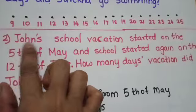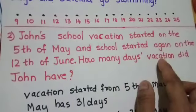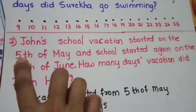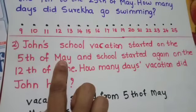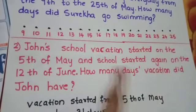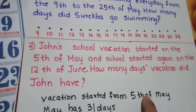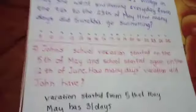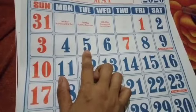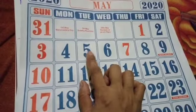Now the second question. John's school vacation started on the 5th of May and school started again on the 12th of June. How many days vacation did John have? Vacation started on the 5th of May. May month has total 31 days. Till the 4th he was having school, and from 5th his vacation started.